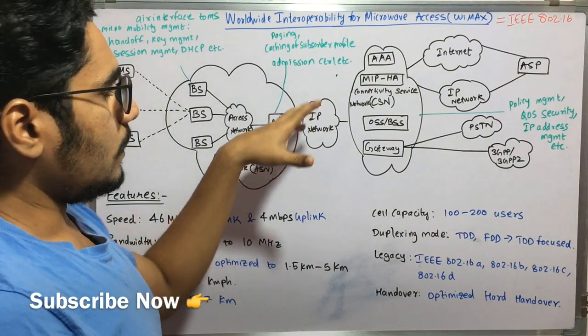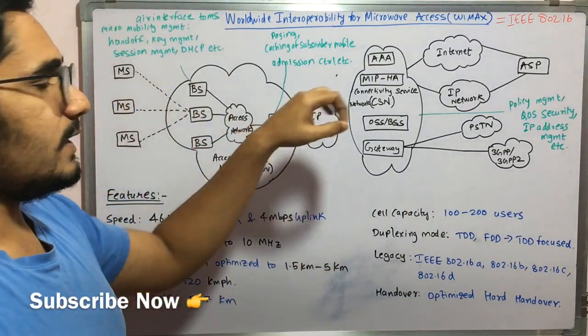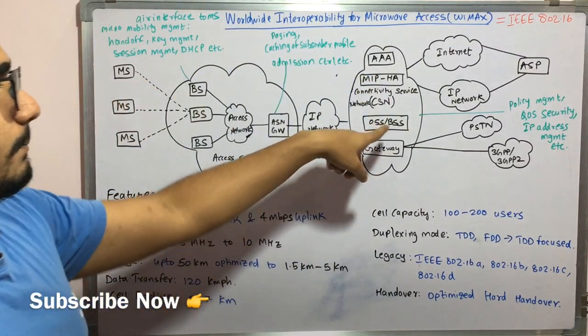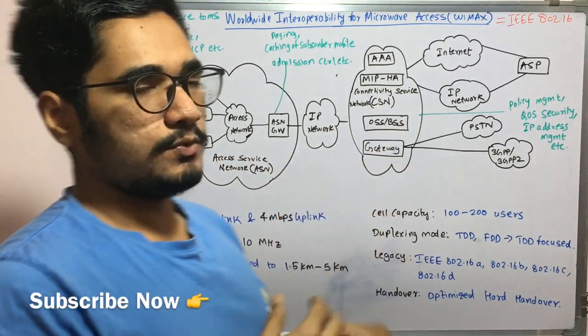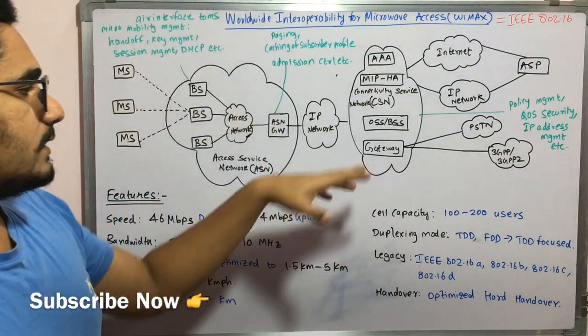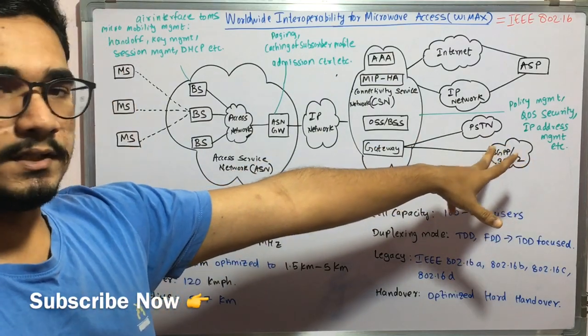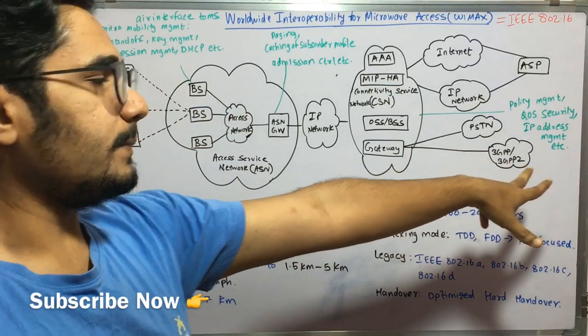So when at a time not all the IPs would be coming but only one particular IP would be coming here and just doing its activity. Then you have the business support system BSS and then you have the operation support system which is used mainly for business activities, and then you have the gateway which just connects to the PSTN as well as 3GPP, that is third generation partnership protocol and its sub-planted version 3GPP2.